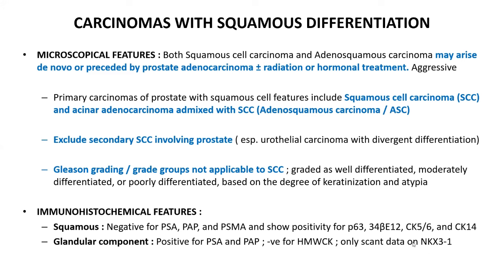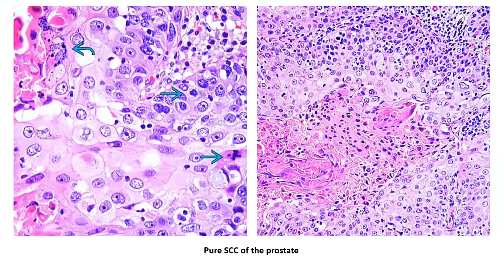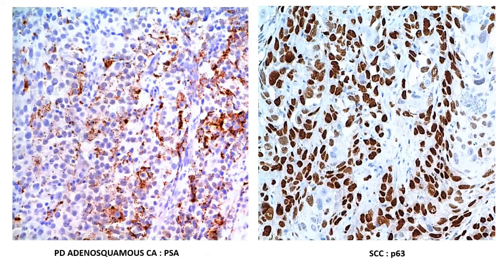The squamous component will be negative for primary prostatic markers but positive for the usual squamous cell carcinoma markers: p63, CK5/6, 34βE12, CK14. The glandular component in adenosquamous carcinoma will be positive for prostatic markers and negative for squamous markers. Scant data exists on NKX3.1 positivity in the glandular component. A case of pure squamous cell carcinoma of the prostate shows characteristic squamous architecture, while in adenosquamous carcinoma, PSA highlights the glandular component and p63 highlights the squamous component. That concludes the discussion of primary prostatic cancers; next we will discuss Gleason scoring and the Gleason grading system.